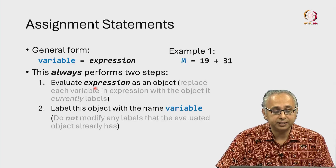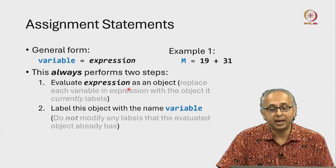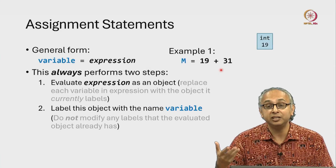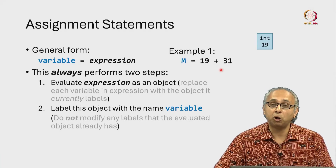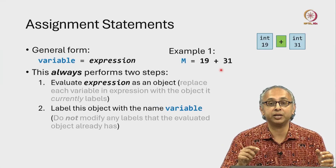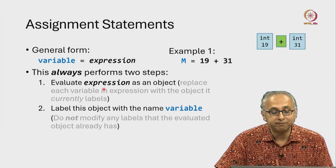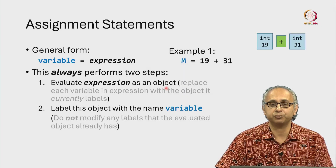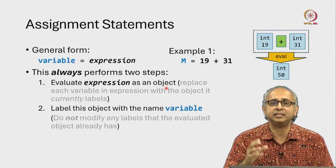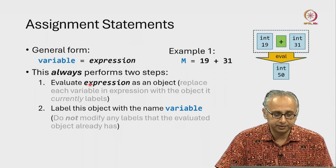Firstly we evaluate the expression, which remember is on the right hand side. The expression could be complicated. In this case the expression involves the integer object 19 and the integer object 31 and the plus operator on those two integer objects. So step one is telling us: firstly evaluate this expression as an object. The Python interpreter takes this expression and evaluates that 19 plus 31 is the integer object 50.